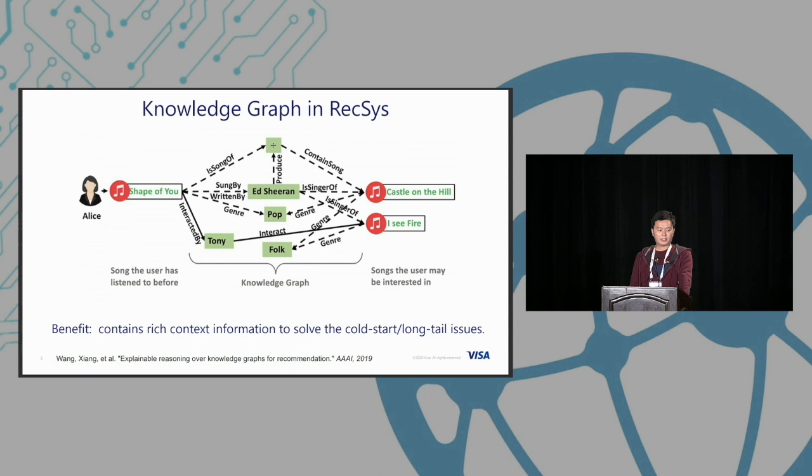For example, the Avengers Endgame. We might also say that this is directed by Taika Waititi, and then we can see that Taika also directed Thor Ragnarok. By using this kind of complicated graph, we can solve the cold start and long tail issues in the system.